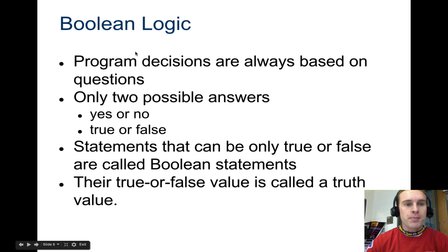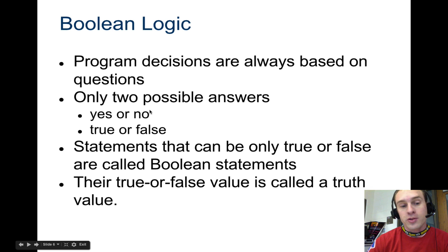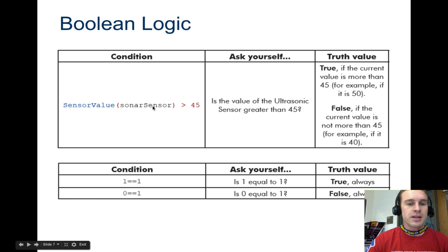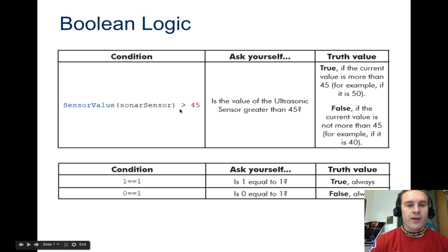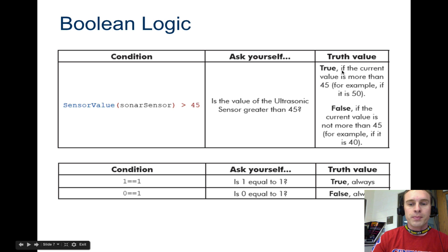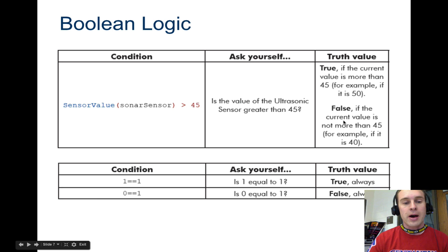While loops and if-else loops are based on Boolean logic, which means there are only two possible answers: yes or no. That's called a truth value. Here's an example: if you want the sonar sensor to be greater than 45 centimeters, you're checking to see if an object is more than 45 centimeters away. If it is, it will do whatever's in that while loop. If it's not, once it gets to the end of the loop and checks again, it'll say false and jump out.